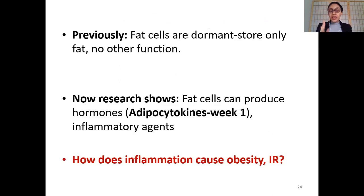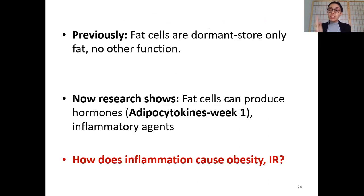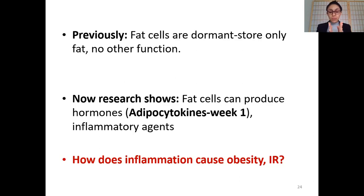Previously it was taught — incorrectly — that fat cells are dormant, meaning their only function is to store fat and nothing else. But now we know that is absolutely wrong, because fat cells have the ability to produce their own hormones, like adipocytokines, which we studied in the week one obesity lecture. Some of these adipocytokines can act as inflammatory agents. So we need to understand the role of inflammation in causing insulin resistance.